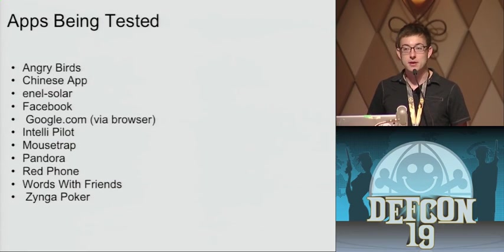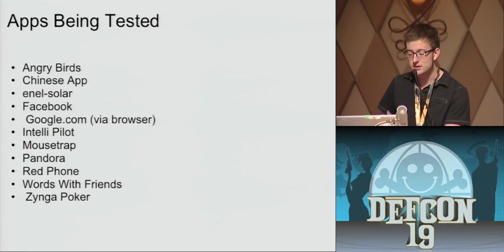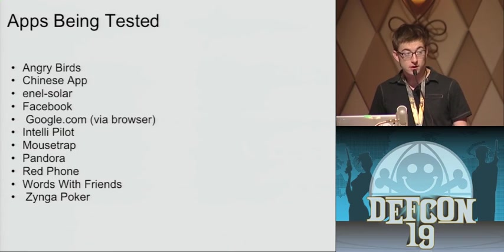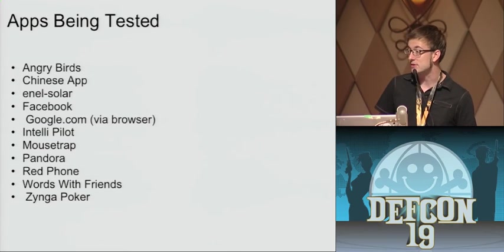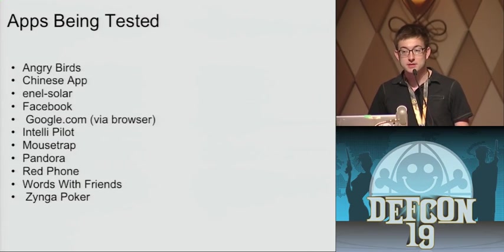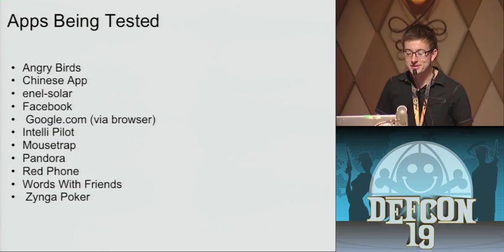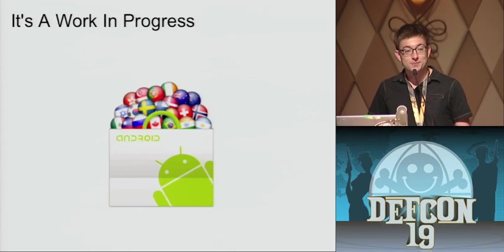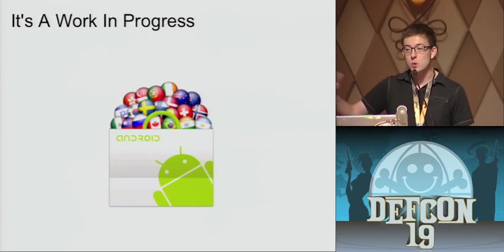Intellipilot, which is an airline pilot's application for using logbooks. Mousetrap, which is a game. Pandora. Red Phone, which is an amazing application created by Moxie Marlinspike — a little app on your Android phone that lets you have secure conversations with other people. I wanted to see if he's doing anything there — we'll find out more about that later. And then Words With Friends and Zynga Poker, because I'm absolutely addicted to Words With Friends. It's obviously a work in progress — I have a lot more applications and operating systems I'd like to test, working towards a standard methodology.